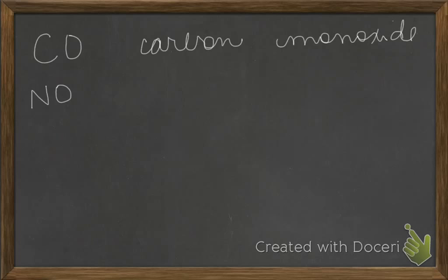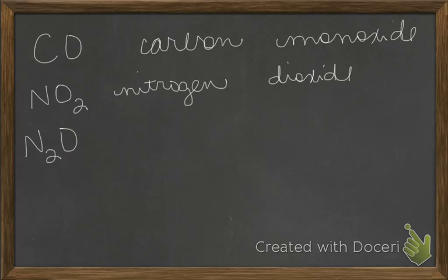NO2. It's not mononitrogen. It's just nitrogen dioxide. What if the first one is something besides mono, like in N2O? N2O is dinitrogen monoxide.